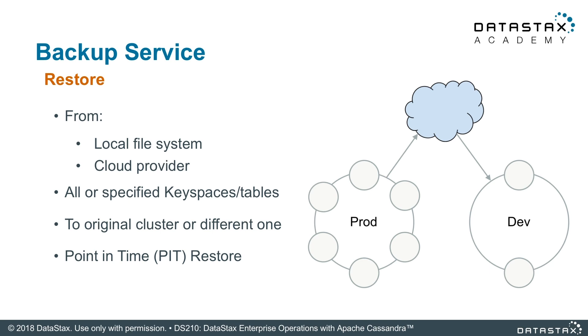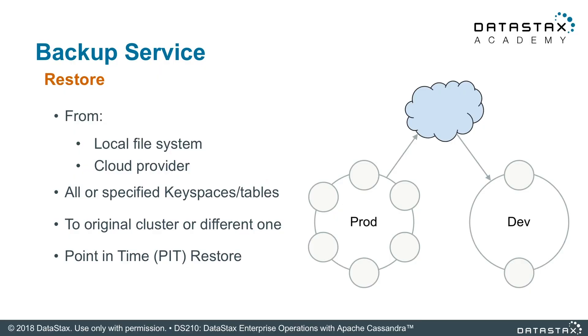The backup service provides detailed reports on all backup and restore activities. You can restore data to a cluster from local keyspace backups or backups stored to cloud storage providers like Amazon S3, restoring all keyspaces or only specified keyspaces and tables. You can restore data from one cluster to another even if the clusters have different topologies, and a point-in-time restore uses commit log archives to restore data to a specific date and time.